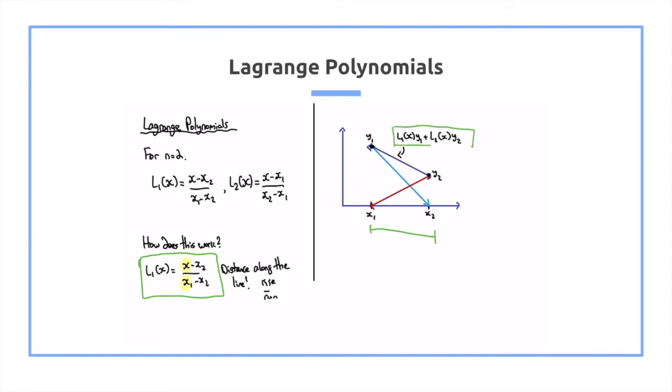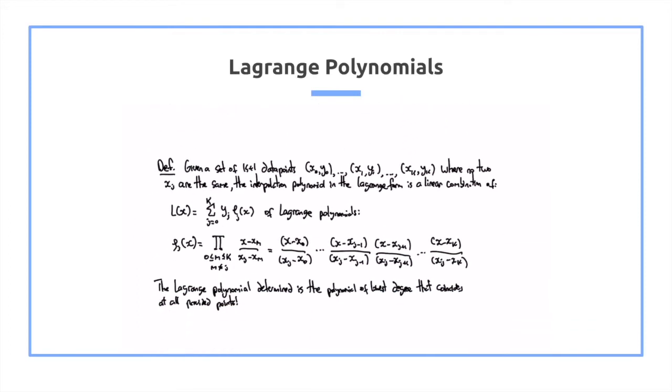If you're interested in the multidimensional case, feel free to pause this video and you can see this larger equation. But essentially, taking this equation and plugging in the values, you can get the end result for what would be the lowest degree that coincides with all the provided points, which is a very powerful theorem.